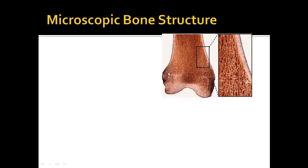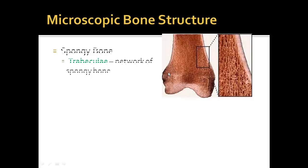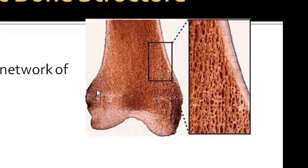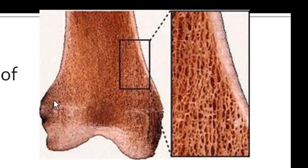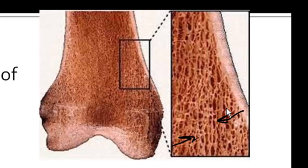What types of bone are formed from this ossification process? The first one is spongy bone. It's not spongy per se, but it's really porous like a sponge. That porous network has a special name — it's called trabeculae. You can see it here; it's all the porous structures.